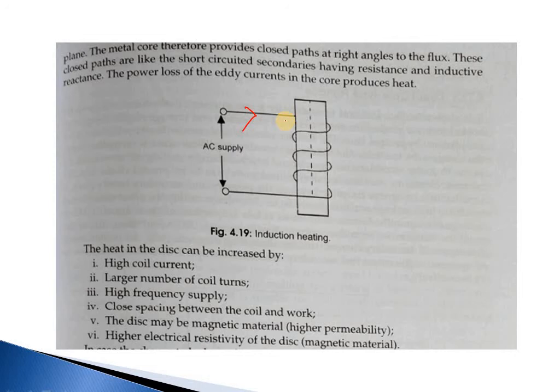The heat in the disc can be increased by: firstly, high coil current; secondly, large number of coil turns; thirdly, high frequency supply; fourthly, close spacing between the coil and the disc; fifthly, the disc may be of magnetic material with higher permeability; sixthly, higher electrical resistivity of the disc. So these are the six points by which we can increase the amount of induction heating.